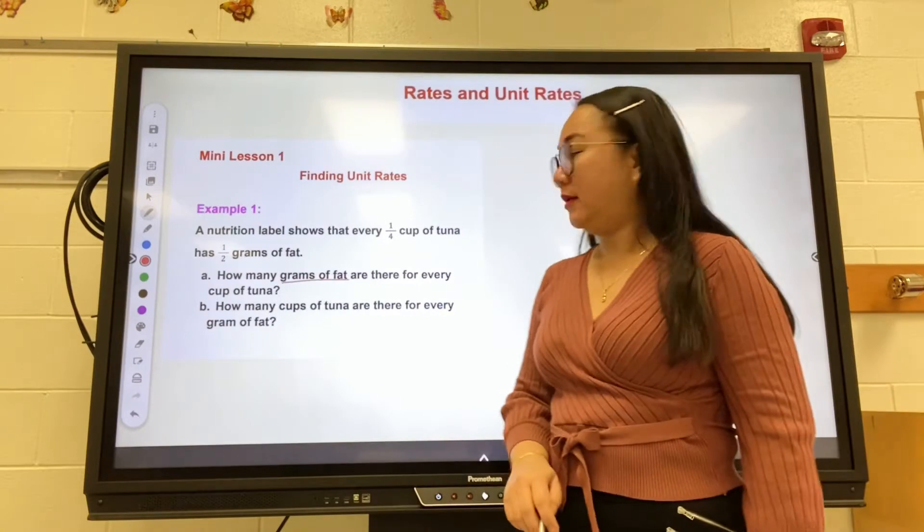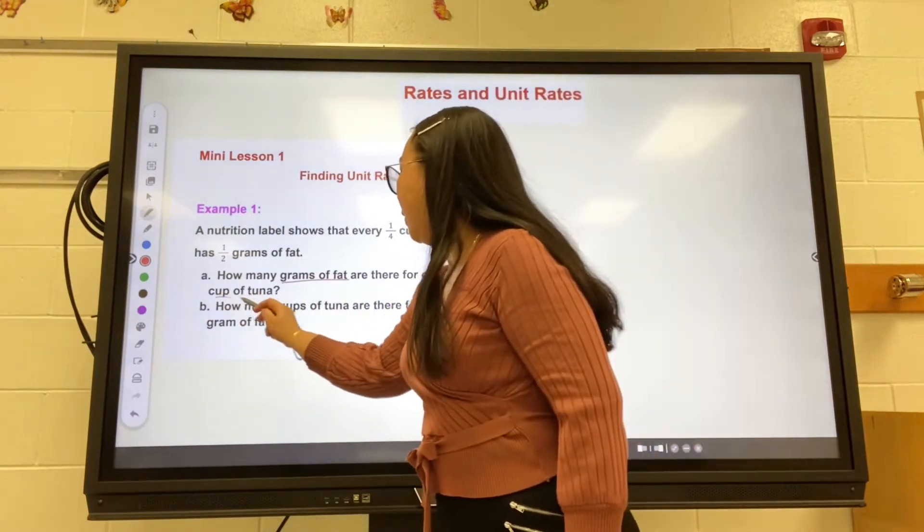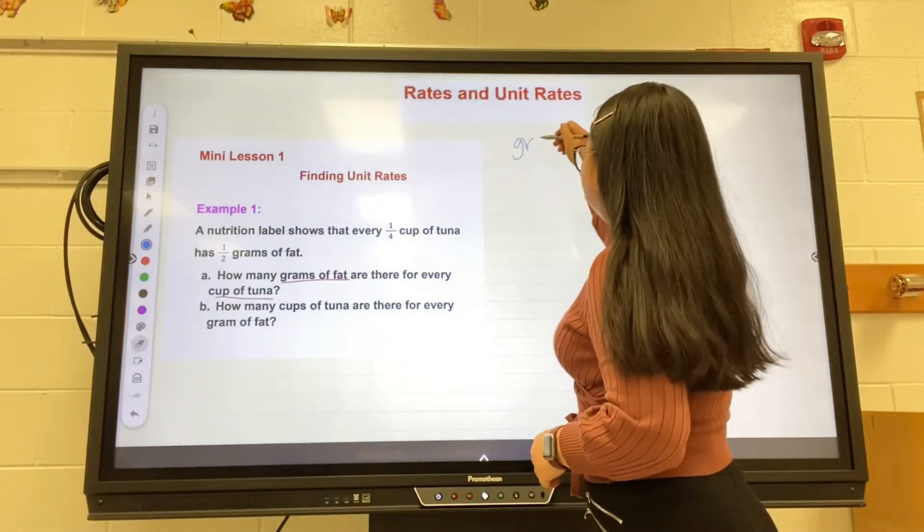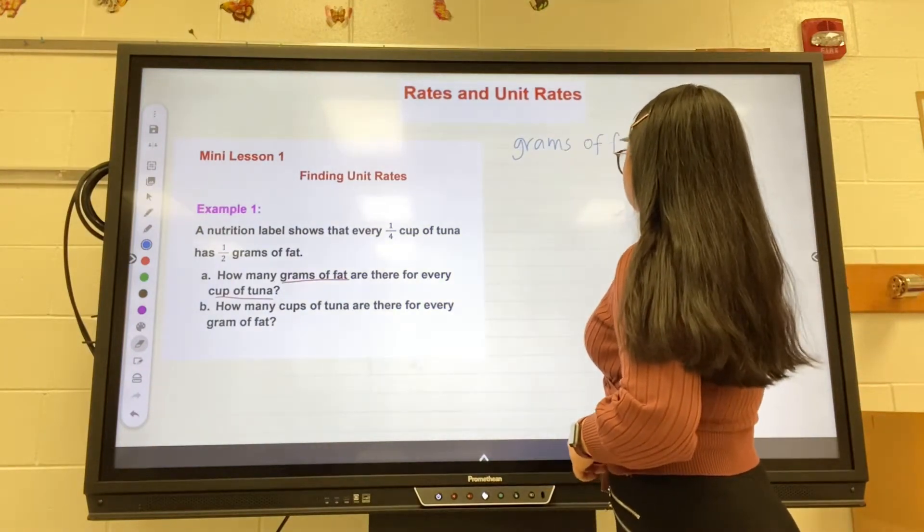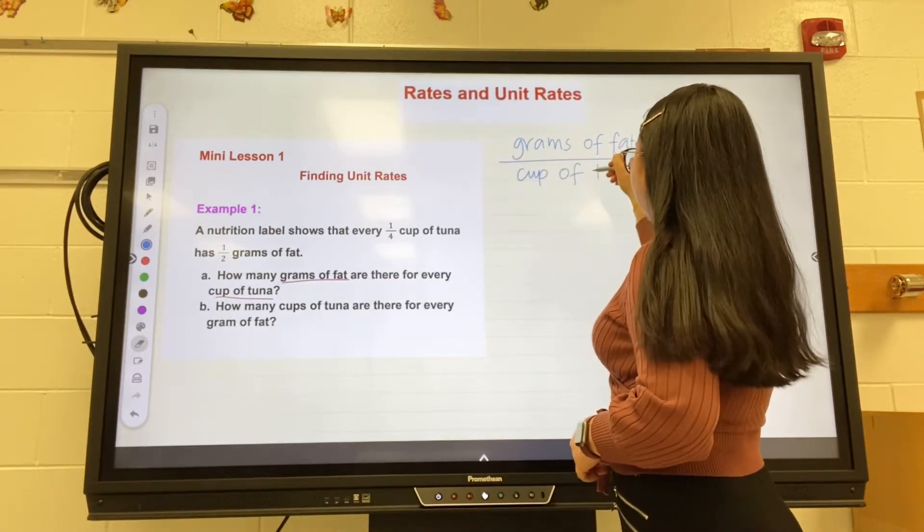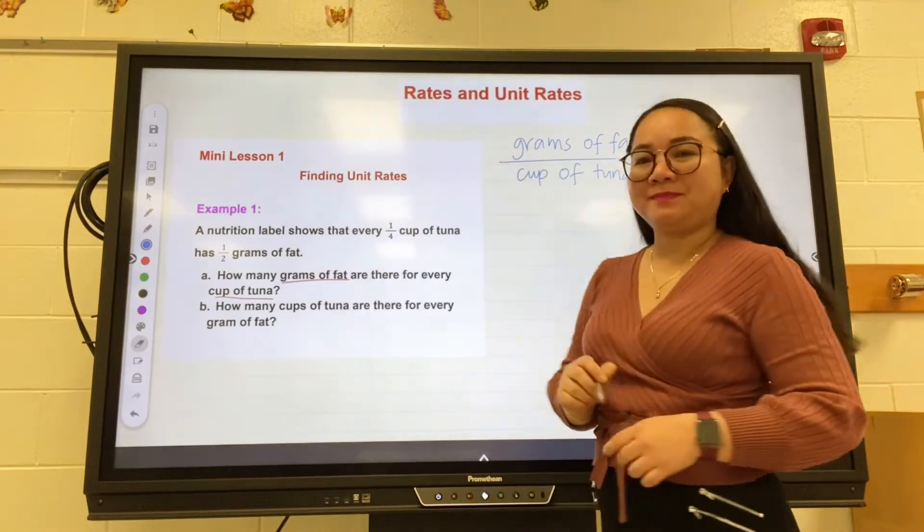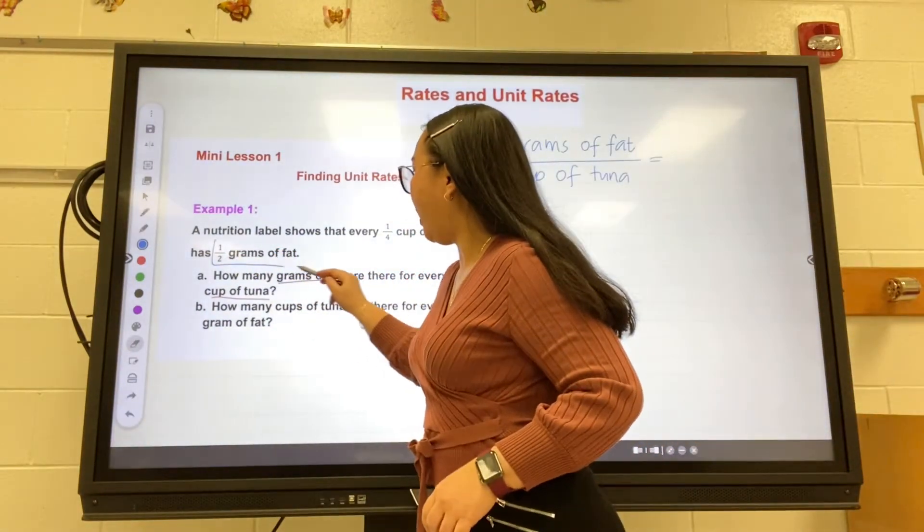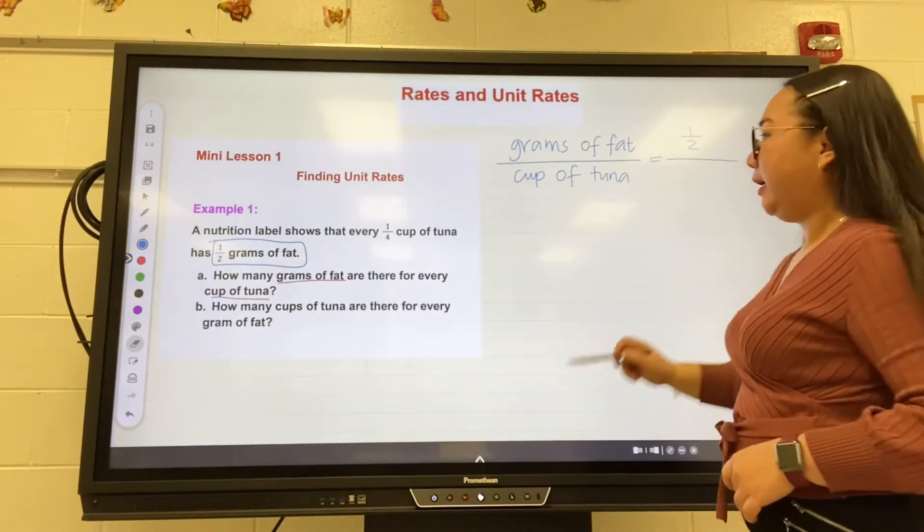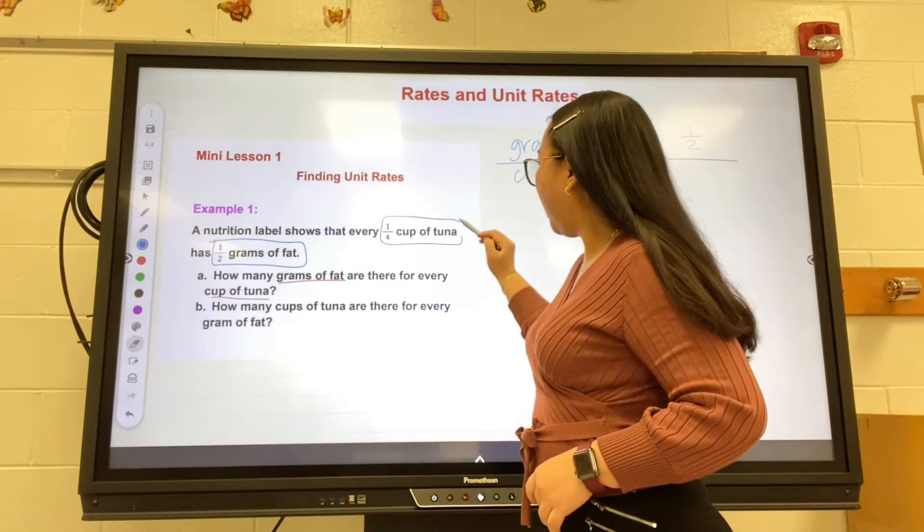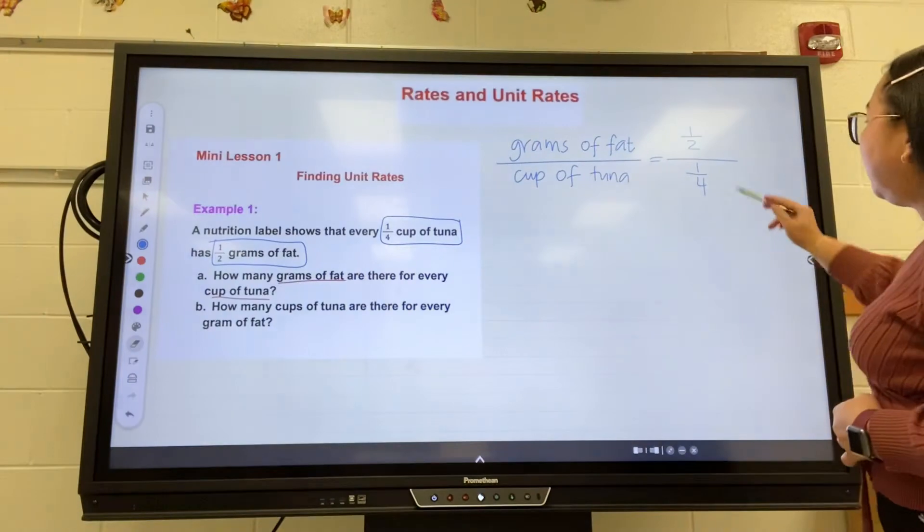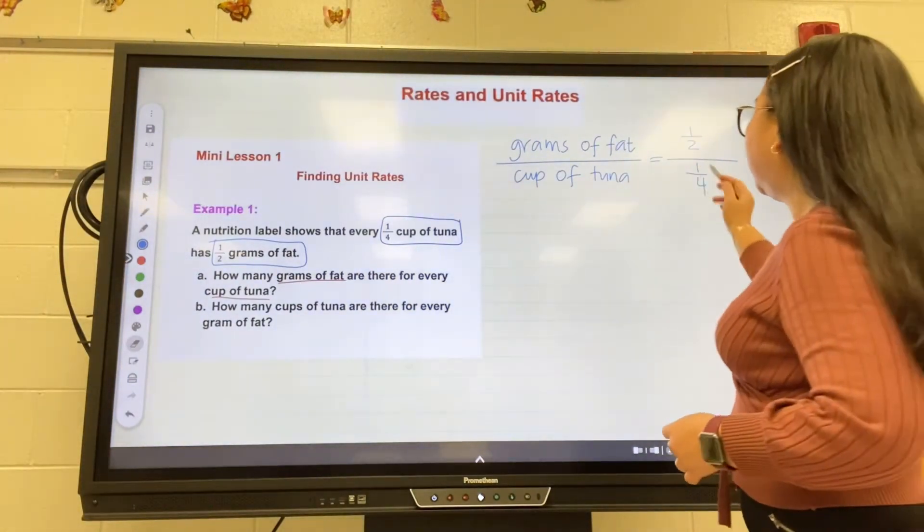So write the ratio: grams of fat to cup of tuna. In the problem, there is one-half grams of fat, so write that one-half, and then one-fourth cup of tuna. So cup of tuna here is one-fourth. We all know that a fraction bar means division, so you can rewrite that as one-half divided by one-fourth.